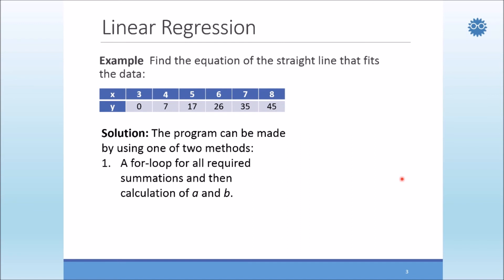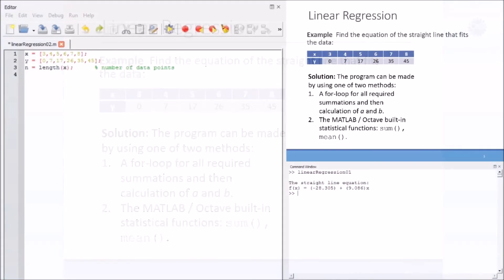The second method in creating the script of linear regression is to use MATLAB Octave built-in statistical functions sum and mean. These functions are built-in, already defined in MATLAB and Octave, so we can use them directly. Let's see how to apply them in the code.